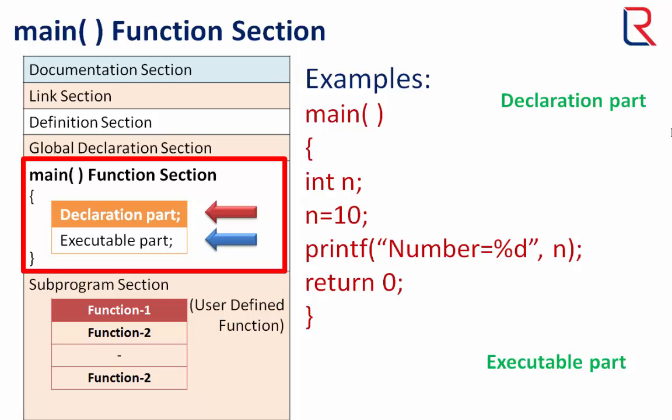There is at least one statement in the executable part. These two parts must appear between the opening and closing braces. The program execution begins at the opening brace and ends at the closing brace. The closing brace of the main function section is the logical end of the program. All statements in the declaration and executable parts end with a semicolon.